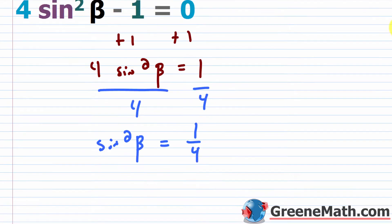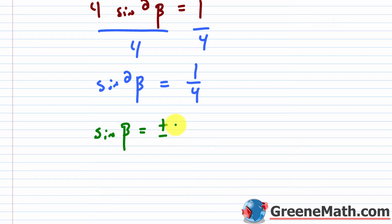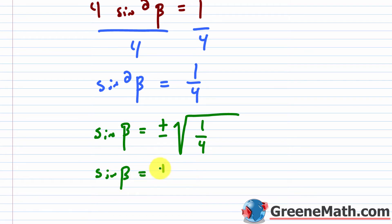Because sine is squared, we take the square root of each side. On the right side, we go plus or minus to account for positive or negative. So the sine of beta equals plus or minus the square root of 1/4. Simplifying, the square root of 1 is 1 and the square root of 4 is 2, so this is plus or minus 1/2.